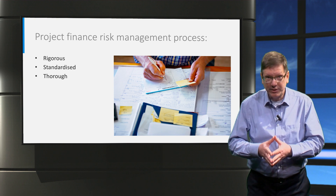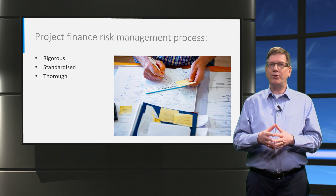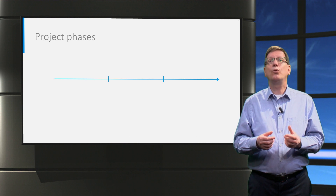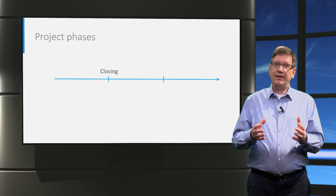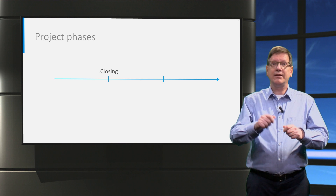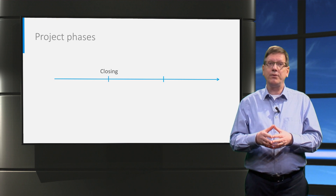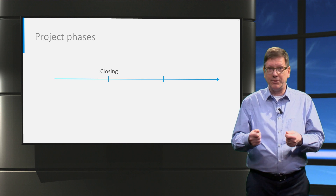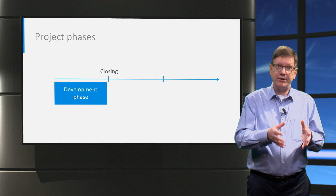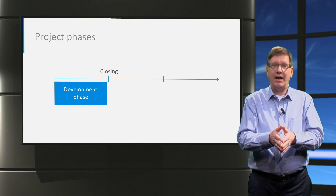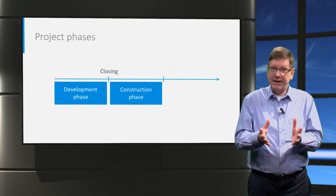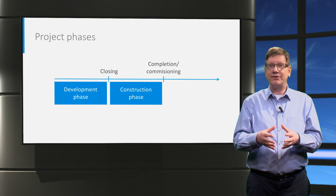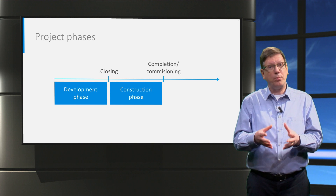So when do we do this risk management? Let's look at the project phases. The legal start of a project is usually called a closing — a session where all the project contracts are signed and the rights and responsibilities of all participants are frozen. After closing, construction can begin. Closing is where the project development phase ends and the construction phase begins. Completion, or commissioning, is when the construction phase ends and the project assets start operation — that's the operating phase.